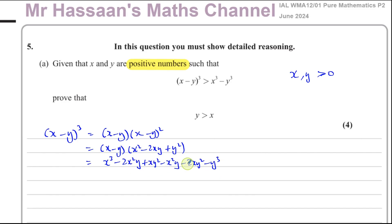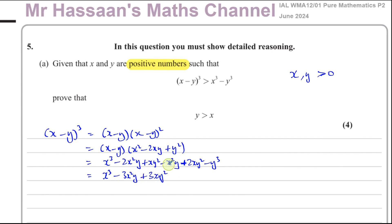It's always important to write things in alphabetical order so it's easy to recognise like terms. So we have x cubed, then minus 2x squared y minus another x squared y, giving minus 3x squared y. Then xy squared plus 2xy squared gives plus 3xy squared. And we're left with minus y cubed. That's the expansion from the first method.